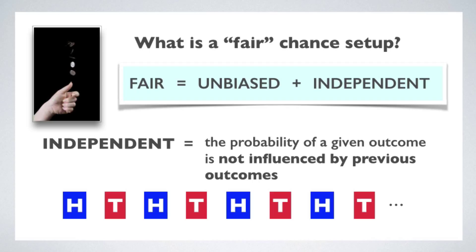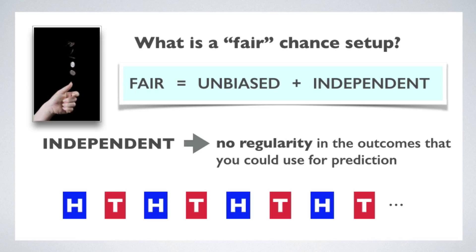Given heads, the probability that the next toss is tails is 100%, not 50%. This notion of independence can be expressed in different ways, and each gives us some additional insight into the concept. We can say, for example, that independence entails that there are no regularities in the outcomes that you could use to improve your ability to predict the next outcome.